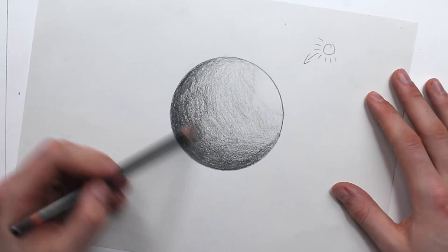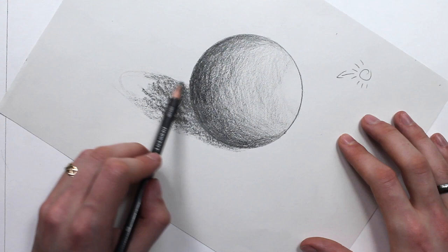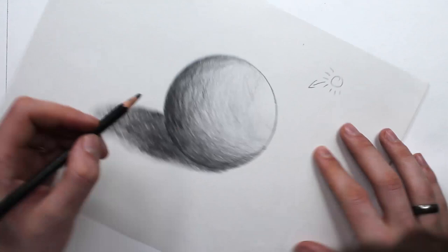Again, adding a cast shadow is an important step, as it helps to trick your brain into seeing the object as though it was sat on a surface, rather than floating in space.